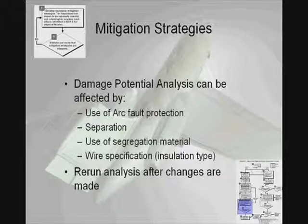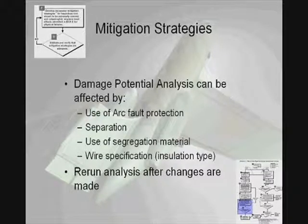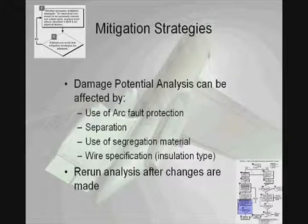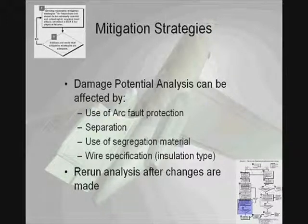In the case that a bundle section has a damage potential in excess of what could be accepted, these modifications — inclusion of an arc fault circuit breaker, or separation of some of the wires within the bundle — can be performed, and the analysis can be rerun after these changes are made.